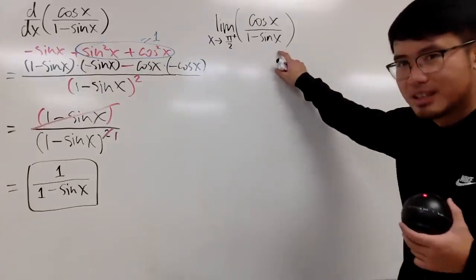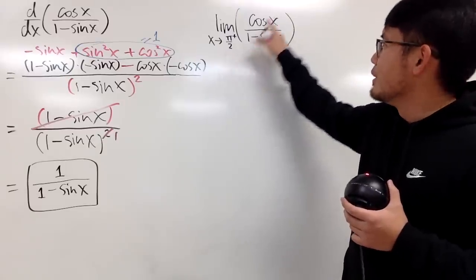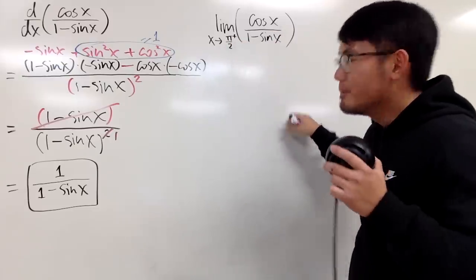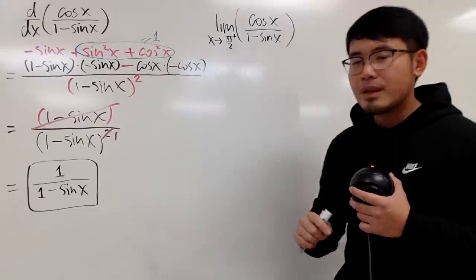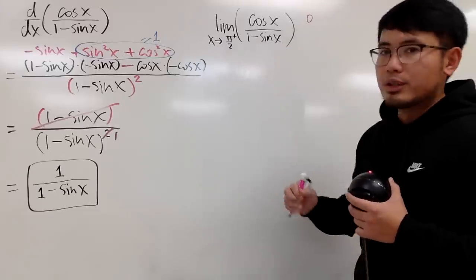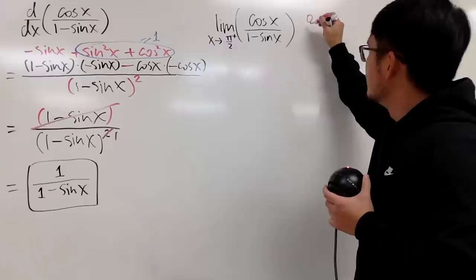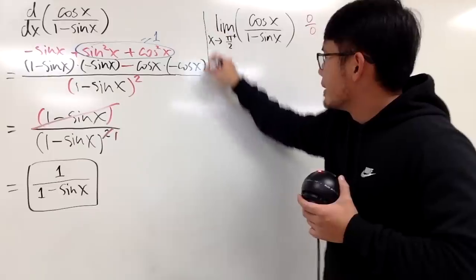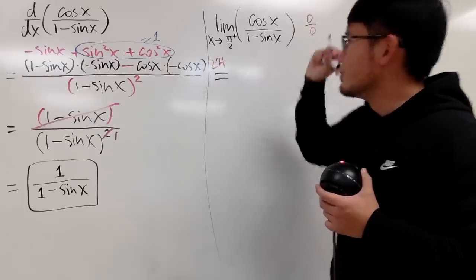Now let's see how we are going to take the limit. First of all, you should always try to plug in the number into the x values. Cosine of pi over 2 — just look at the pi over 2 plus as pi over 2 for now — cosine of pi over 2 is 0. And then sine of pi over 2 is 1. On the bottom, you will get 1 minus 1. So the first step gives us 0 over 0. Because we have a 0 over 0 situation, we get to use L'Hôpital's rule.